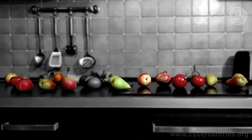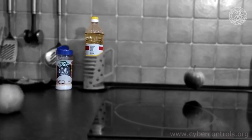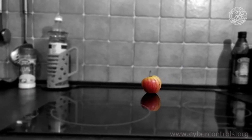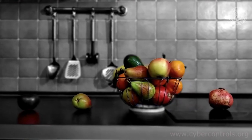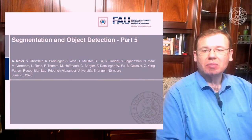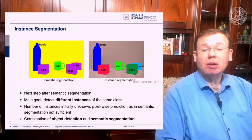Welcome back to deep learning. Today we want to talk about the last part of object detection and segmentation, and we want to look into the concept of instance segmentation. This is already part five. We not just want to detect where pixels with cubes are or where pixels with cups are, but we want to really figure out which pixels belong to what cube. So this is essentially a combination of object detection and semantic segmentation.